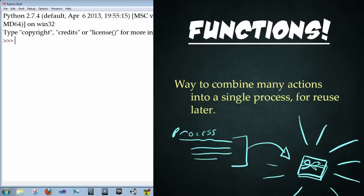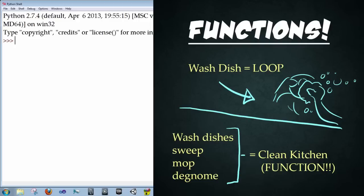So the last video I referred to loops as a way of repeating a certain action over and over, like washing dishes. Functions would be a collection of actions, such as cleaning a kitchen, and that includes doing dishes, sweeping, mopping, de-gnoming under the sink, whatever it may be. And that's a Harry Potter reference for any of you who got it. So how do functions work?